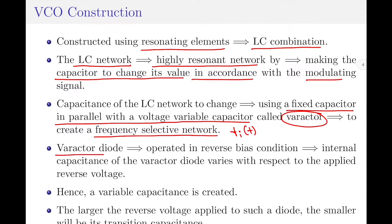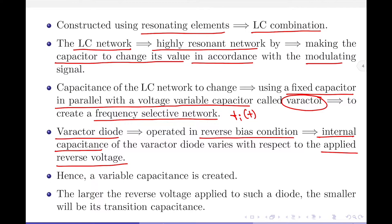What is a varactor diode? A varactor diode is a type of diode that is commonly operated in reverse bias condition. In reverse bias condition, the internal capacitance of the varactor diode varies with respect to the applied reverse voltage. Since the depletion region exists under reverse bias, this creates what is called a variable capacitance effect. So in my resonant circuit I have an inductor, a fixed capacitor, and a variable capacitor. An important characteristic of the varactor diode is that the larger the reverse voltage applied to this diode, the smaller will be its transition capacitance.